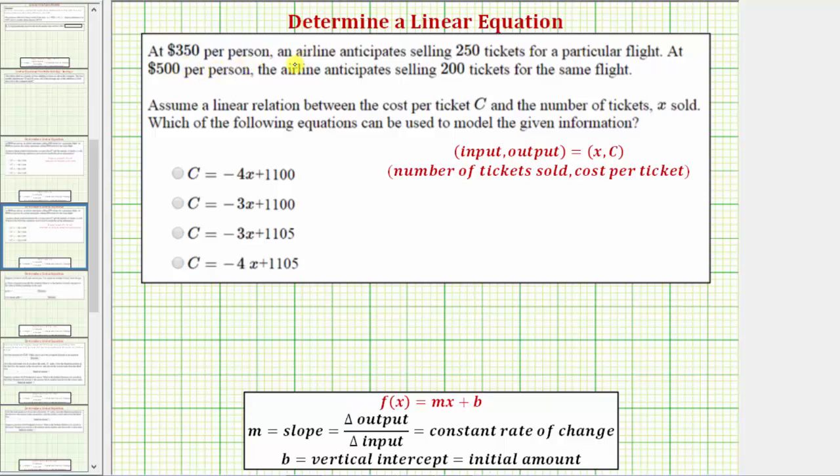At $350 per person, an airline anticipates selling 250 tickets for a particular flight. At $500 per person, the airline anticipates selling 200 tickets for the same flight.